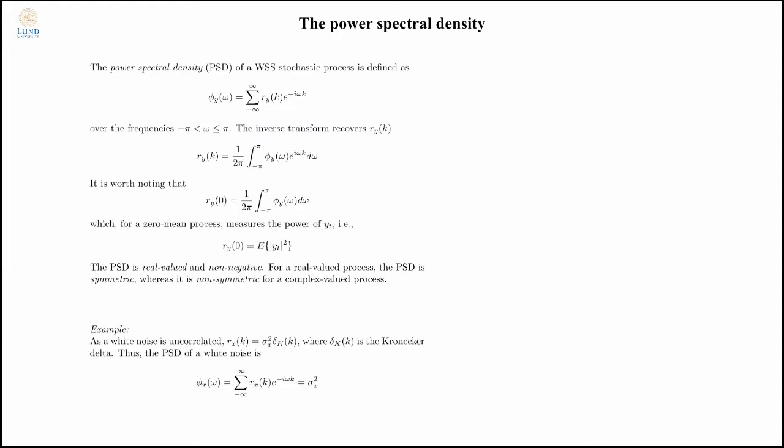I can retrieve the autocovariance function by taking the inverse Fourier transform, which is an integral from minus pi to pi, because the power spectral density is a continuous function over all these frequencies.